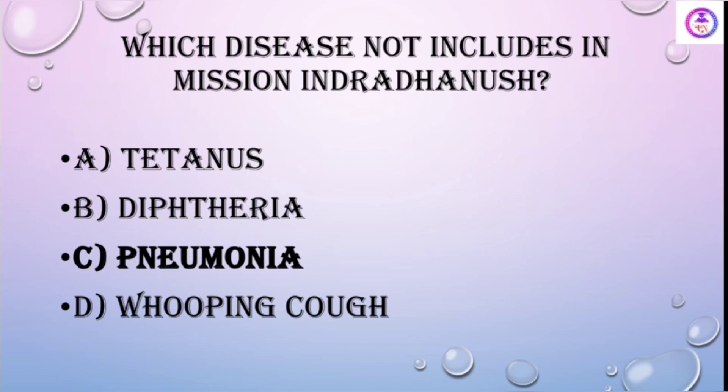Which disease is not included in Mission Indra Dhanush? Pneumonia is not included. What is included in the Indra Dhanush mission: Tetanus, Diphtheria, Whooping cough (pertussis) — that is DPT: Diphtheria, Pertussis, and Tetanus.